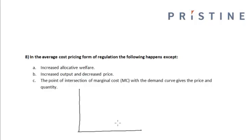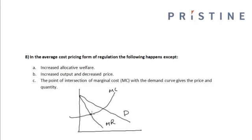Now in a monopolistic environment, we have the demand curve and the marginal revenue curve. The intersection of the marginal cost curve with the marginal revenue curve gives the optimal quantity, and the price on the demand curve corresponding to that optimal quantity gives the price charged by the monopoly.